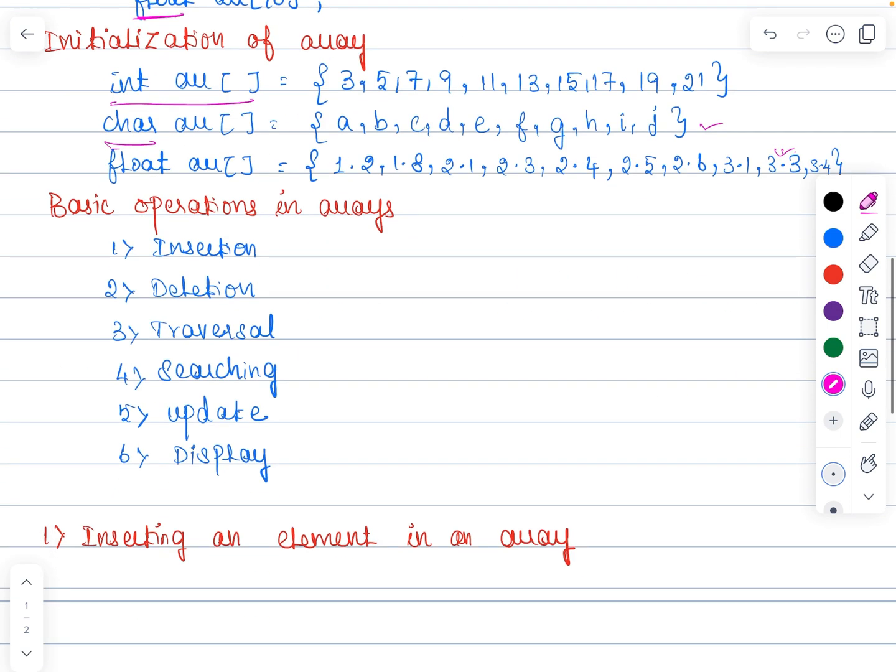Next topic is about the basic operations in an array. The basic operations in arrays are insertion, deletion, traversal, searching, update, and display. These operations are usually performed to either modify the data in the array or to report the status of the array. These are the basic operations supported by an array, let us discuss each operation separately.